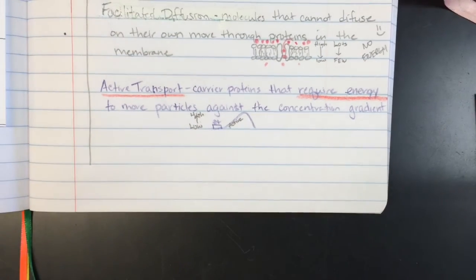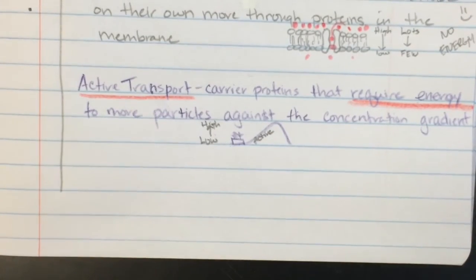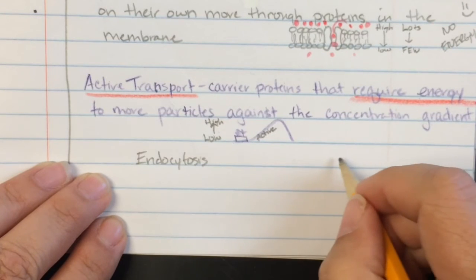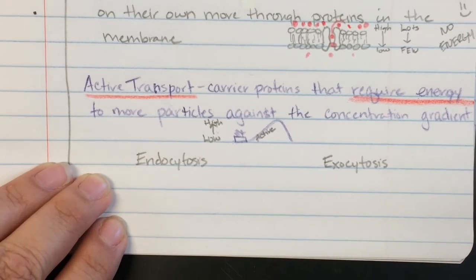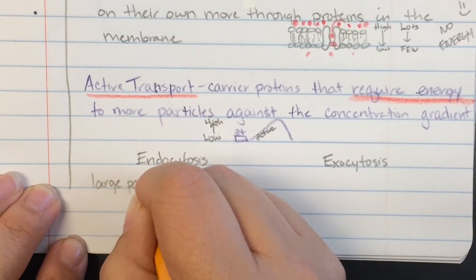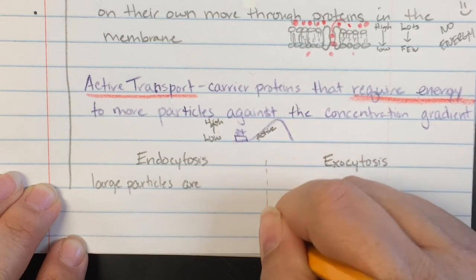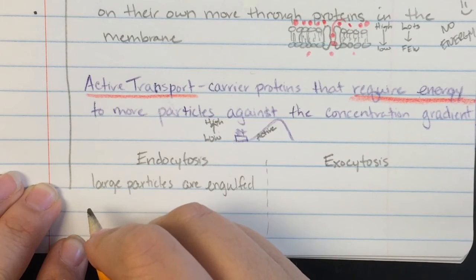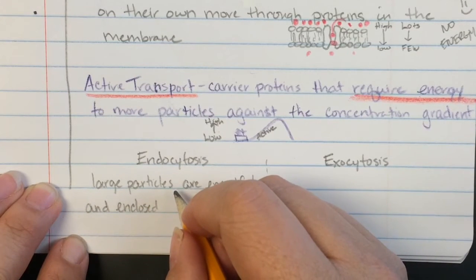Alright last two things are two processes that are both a part of an energy consumption and that is endocytosis and exocytosis. So in endocytosis that word kinda sounds like into and so here we have large particles are, let me draw a little line here so I remember to keep these separate, engulfed, I love this word, engulfed and enclosed by a cell membrane.